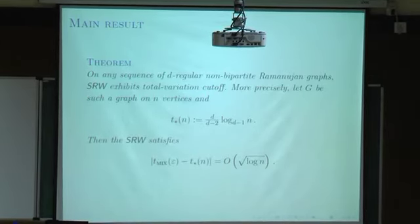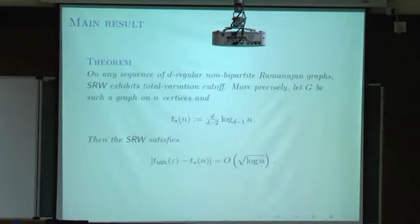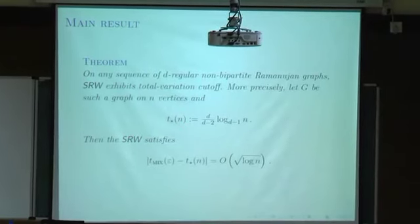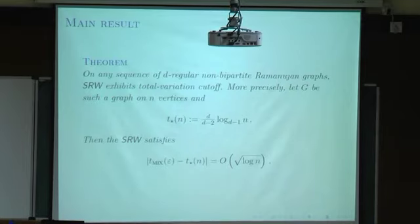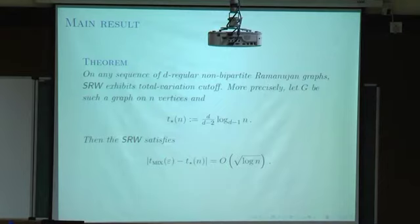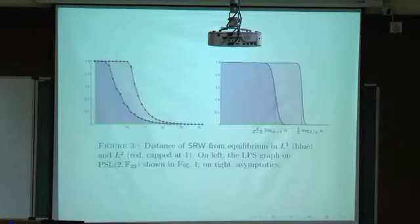It's easy to see that the mixing time cannot be lower than T*(n), so this is a lower bound for the mixing time on any D-regular graph. This is as fast as you can mix asymptotically on any D-regular graph, just from comparison to a tree. The basic takeaway is that Ramanujan graphs mix as fast as possible — random walk mixes as fast as possible.